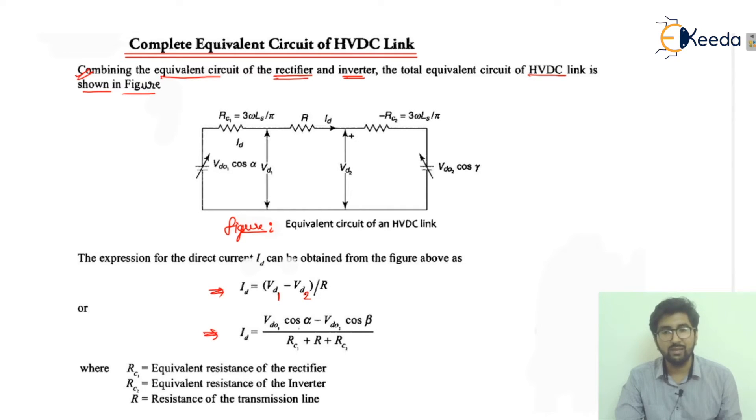VD1 is VDO1 cos alpha and this is VDO2 cos gamma. It can be represented as cos gamma or cos beta depending on the conditions which we require. It can be represented as gamma or beta depending on the conditions.